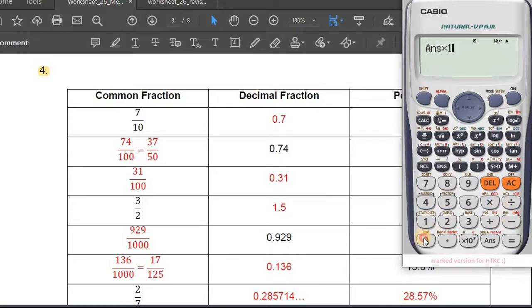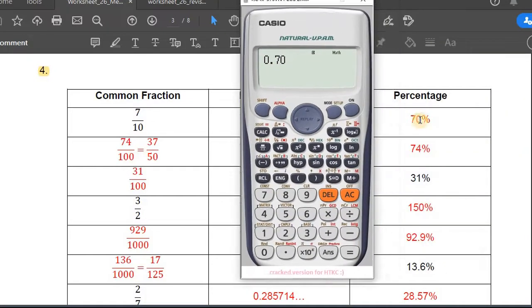Or you could read it like this: 0.7, this is 0.70. If you look at it, you've got 0.70, so what you do is your first two digits here, it will be your percentage.